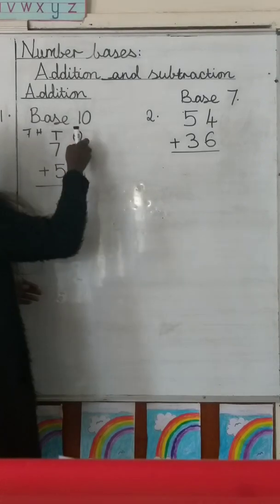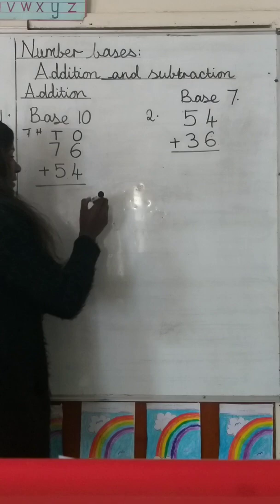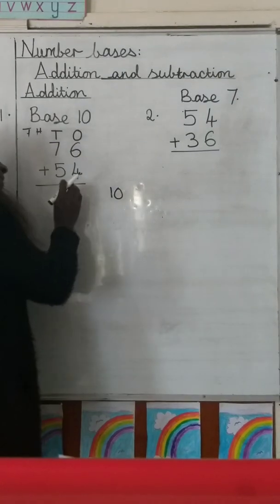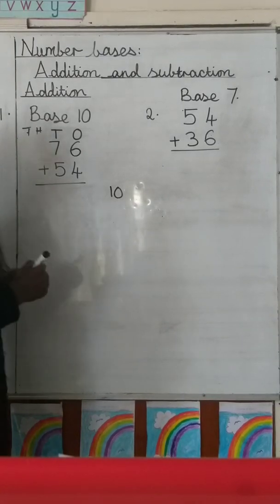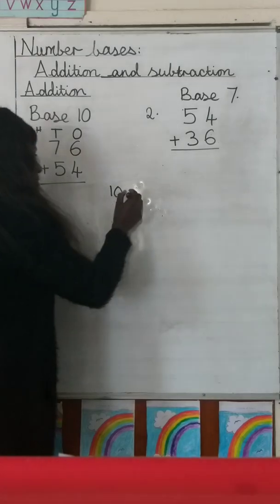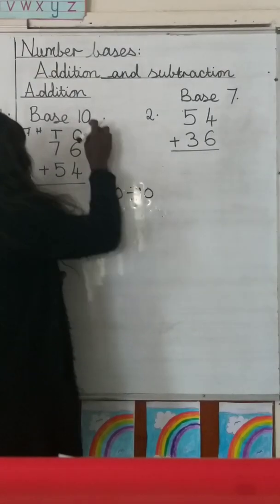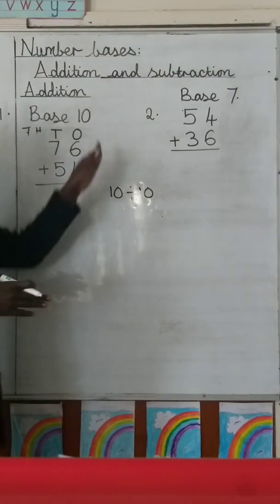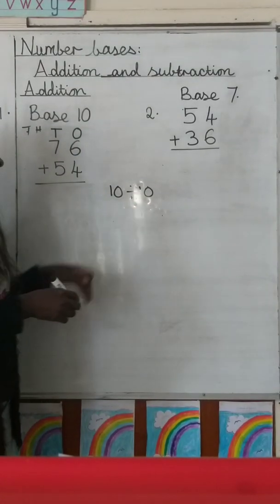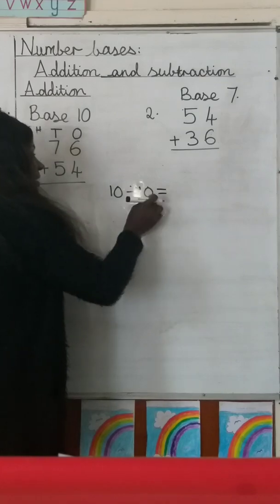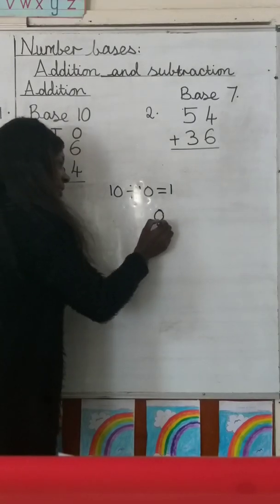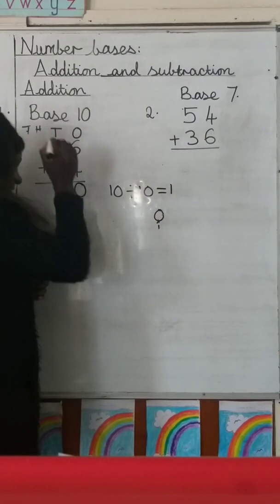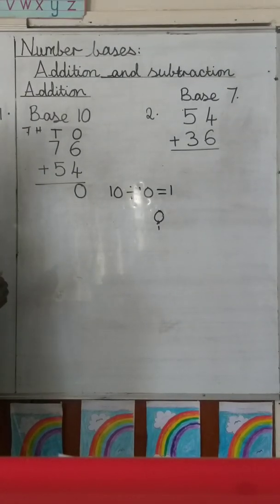We start adding from the ones column. What is 6 plus 4? 6 plus 4 gives us 10. We do not write 10 there in base 10. We divide it by the base itself — 10 divided by 10 gives us 1, with a remainder of 0. The remainder, which is zero, is what we write in the ones column.